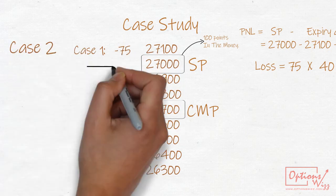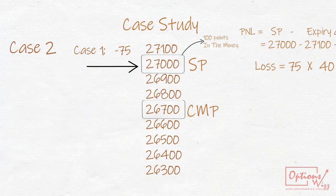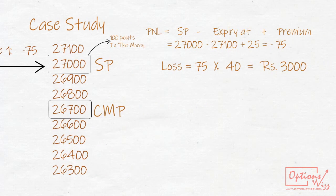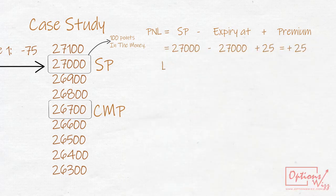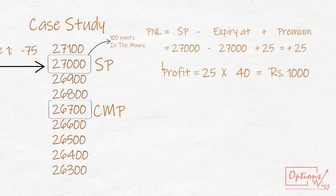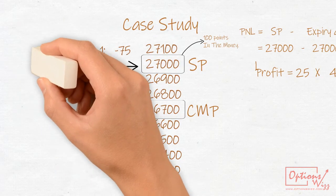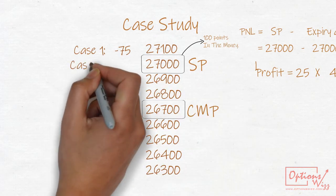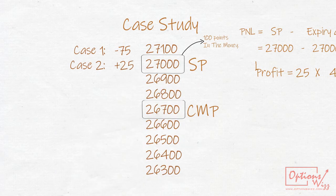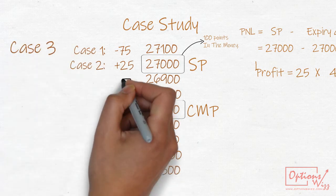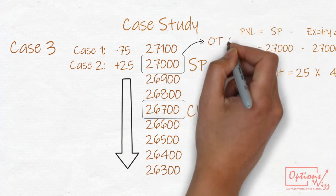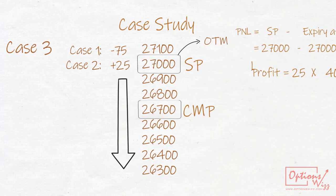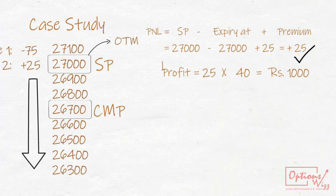Case 2: Bank Nifty expires at 27,000. 27,000 call will be at the money and will have no value. P&L in this case will be 25 points. Here Gorish earns rupees 1,000. Case 3: Bank Nifty expires below 27,000. 27,000 call will be out of money and will have no value. P&L in this case will be 25 points.